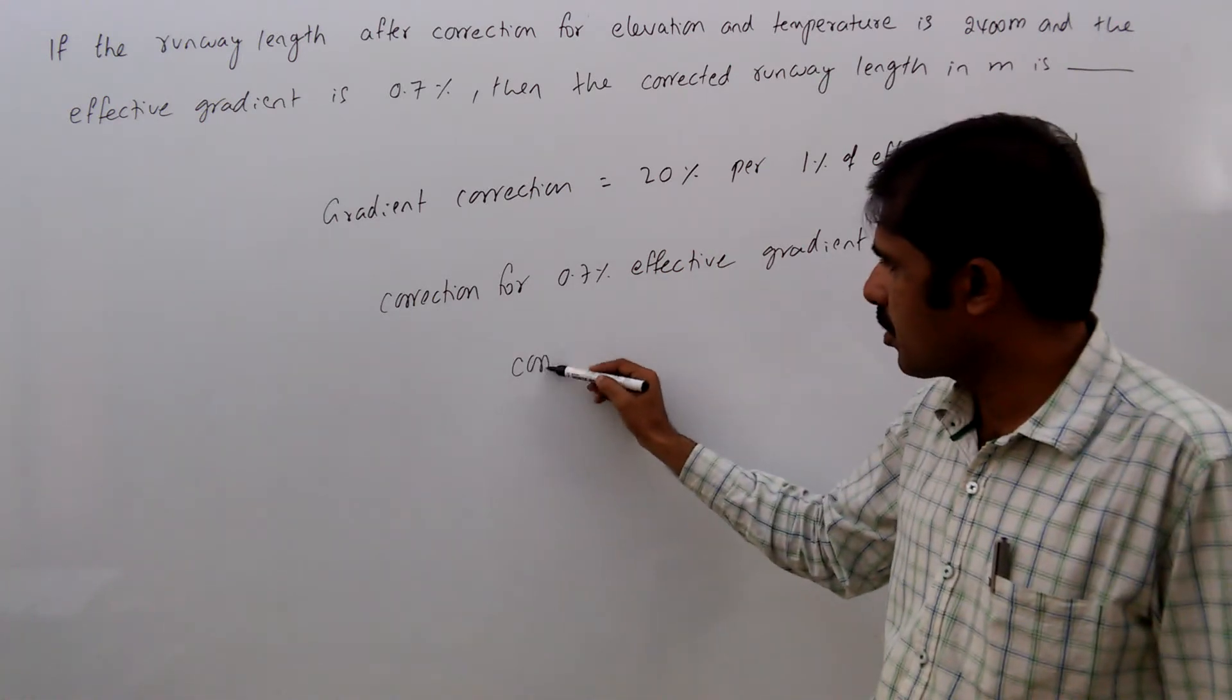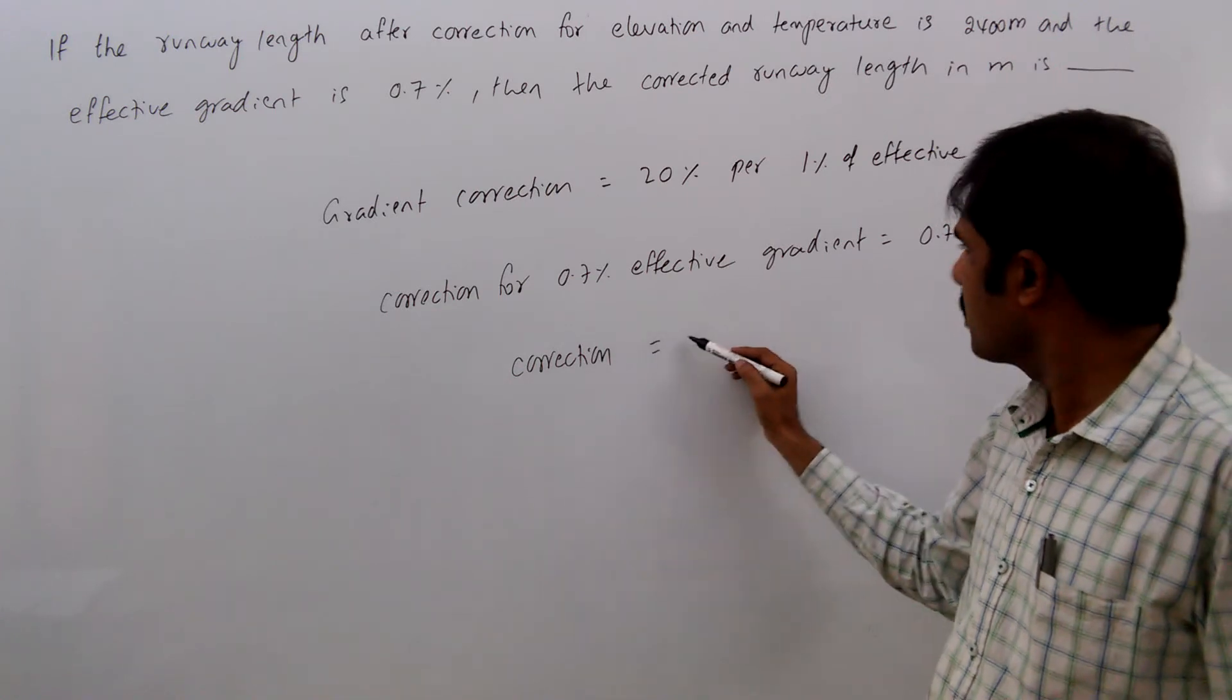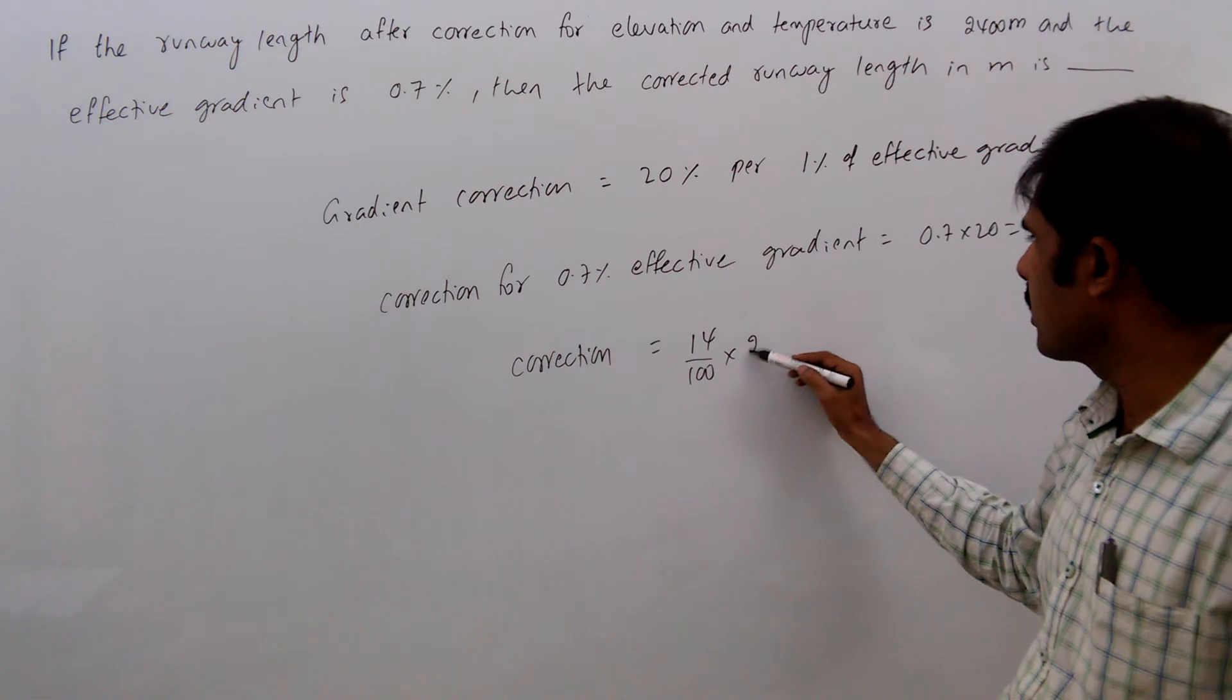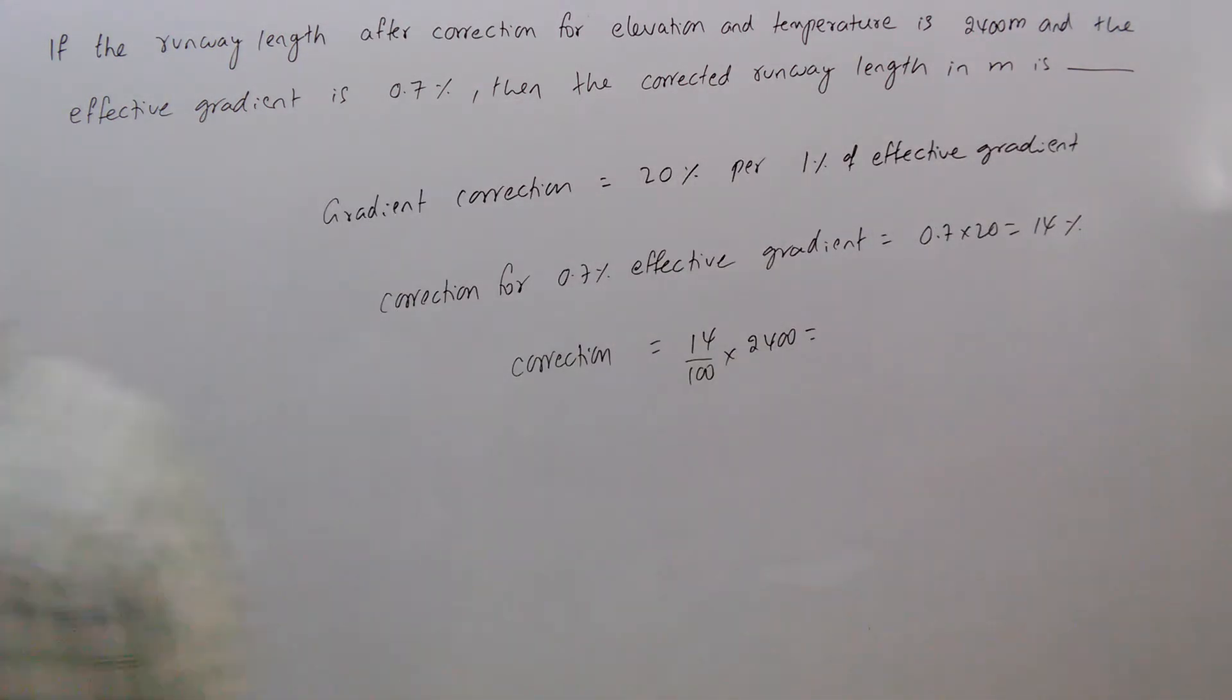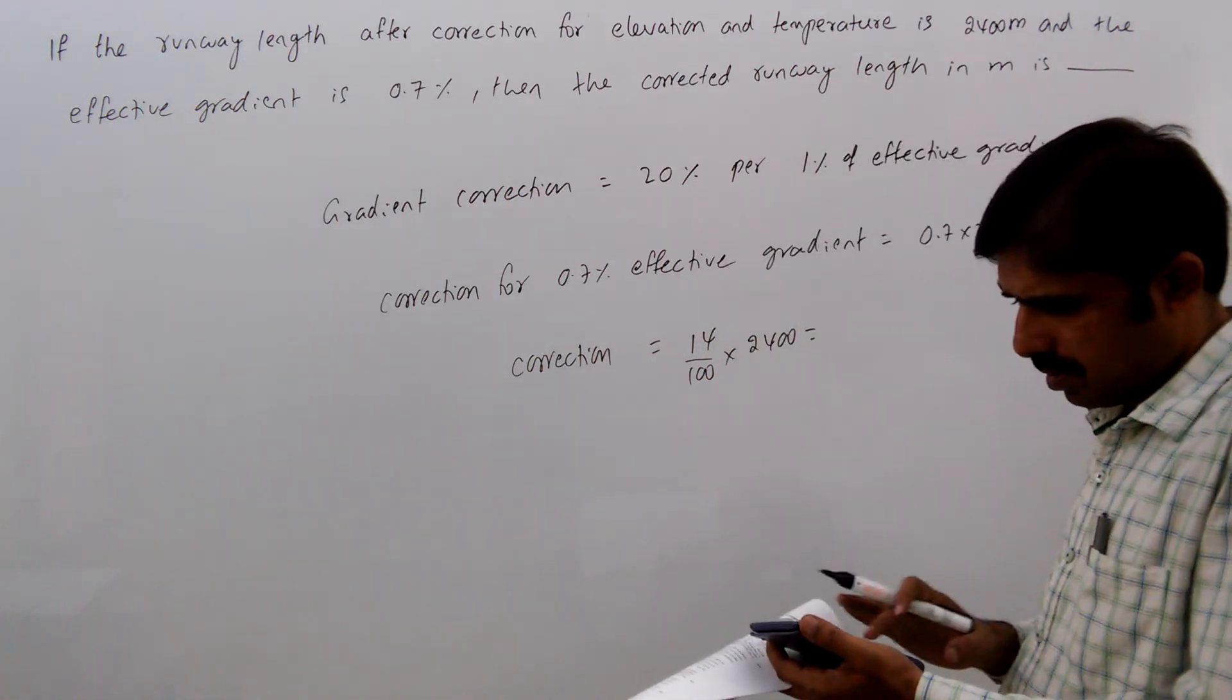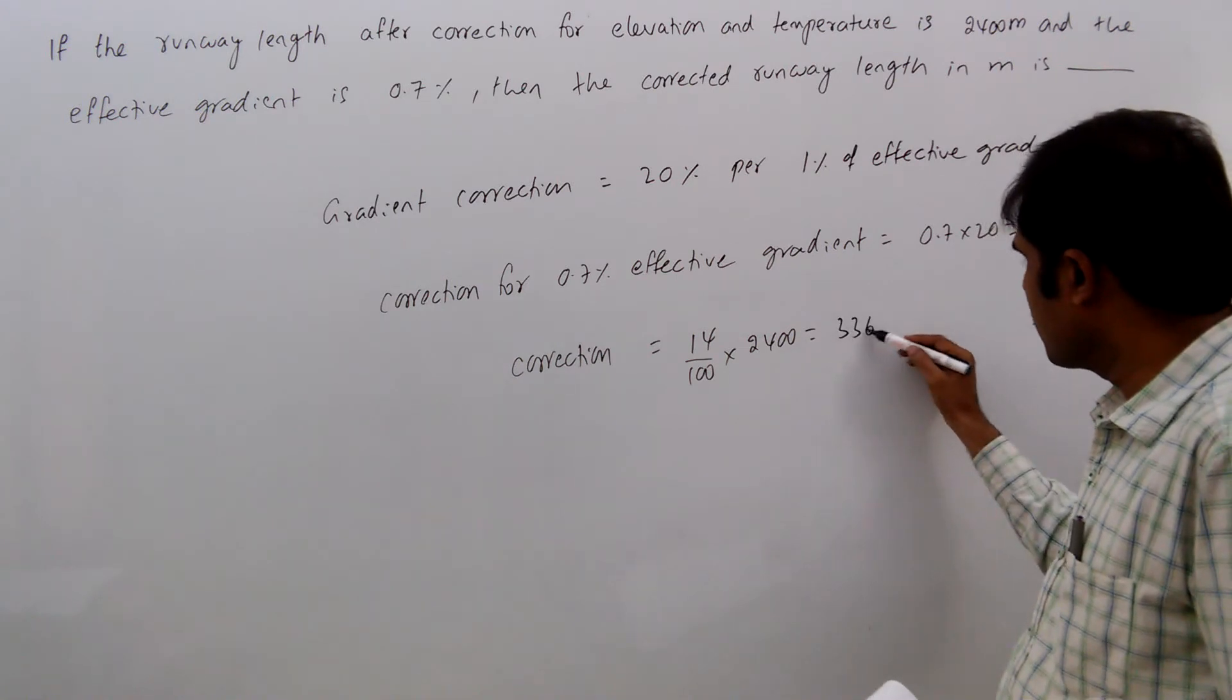So, correction equals 14 by 100 into 2400, that equals 336 meters.